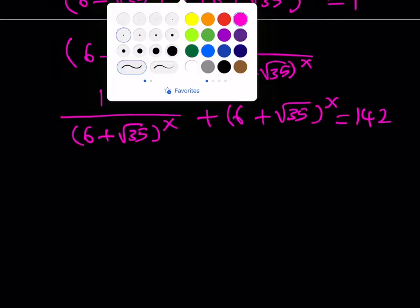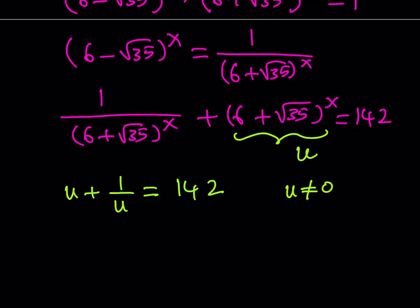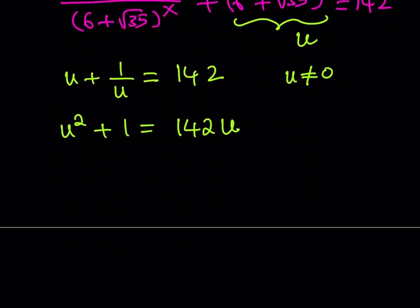I'd like to use substitution. Let u equal 6 plus root 35 to the power x. Then I get u plus 1 over u equals 142. Note that u cannot equal 0 — and it won't, since it's a positive radical expression. So I can multiply both sides by u, giving u squared plus 1 equals 142u. Rearranging, this is a quadratic equation in u.